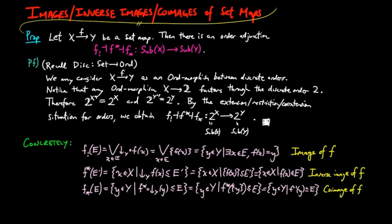Note that the co-image of a subset e is also given by the set Y subtraction the image of X subtraction the image of e, which can be used in the proof of the Cantor-Schroeder-Bernstein theorem.